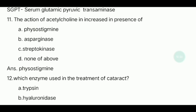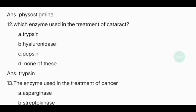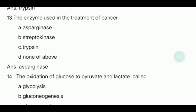Twelfth question: Which enzyme is used in the treatment of cataract? The answer is trypsin. Thirteenth question: Which enzyme is used in the treatment of cancer? The answer is asparaginase.